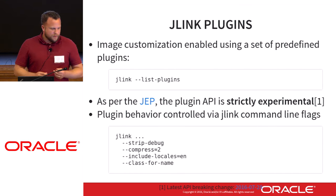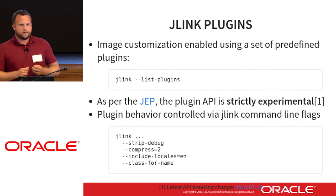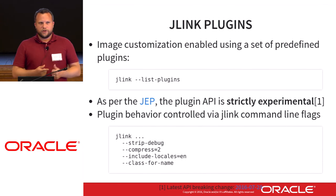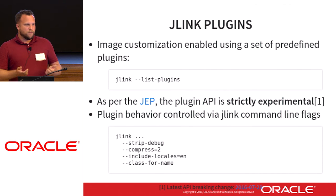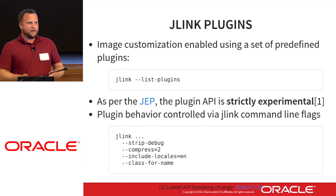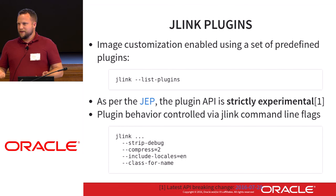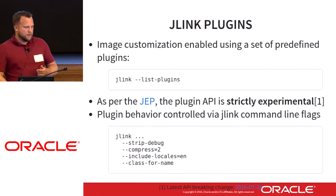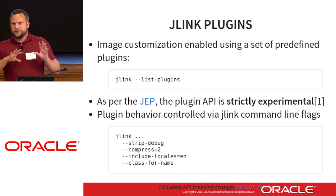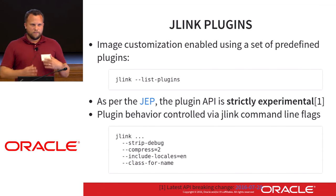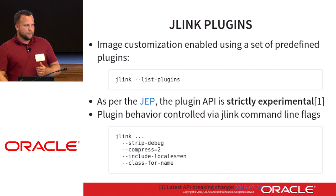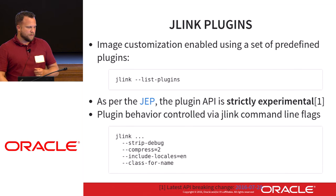We do provide lots of predefined plugins, such as strip debug and compression plugins to define how much compression we apply to the runtime image. We have an include locales plugin — the name is a bit of a misnomer because it's really about stripping locales. Rather than the default of including all locales as in the JDK or JRE today, here we have the ability to strip things out. That's one of the cool things about J-Link: the ability to strip away things you don't need in your runtime environment and specific deployment in a supported way.